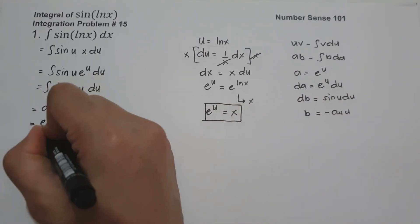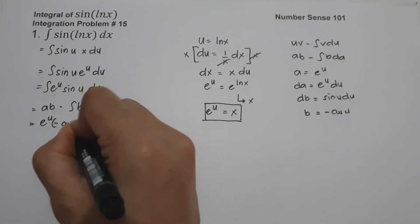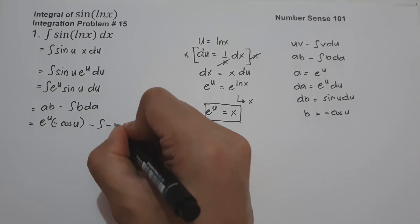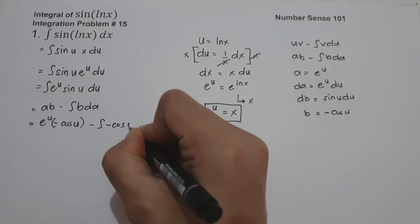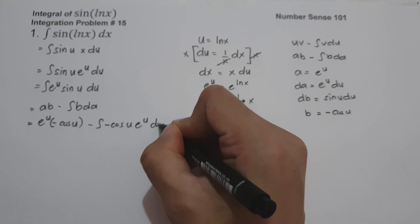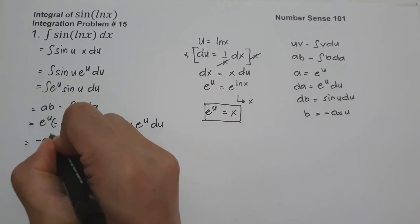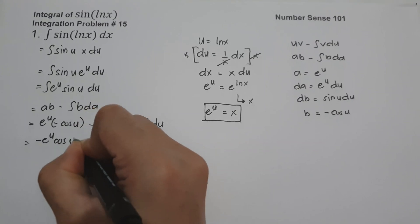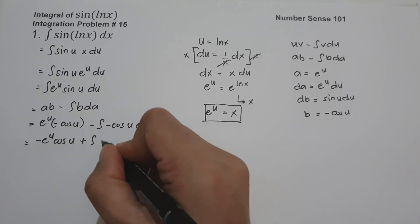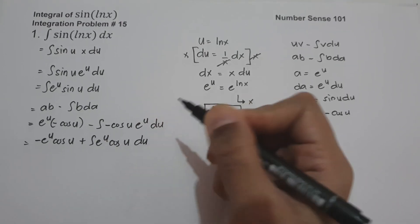Applying ab minus the anti-derivative of b da: a is e raised to u, b is negative cosine u, minus the anti-derivative of negative cosine u times e raised to u du. This simplifies to negative e raised to u cosine u, and negative times negative is positive, giving plus the anti-derivative of e raised to u cosine u du.